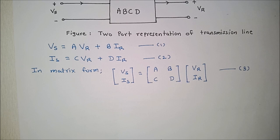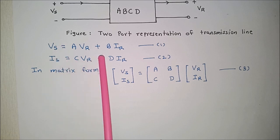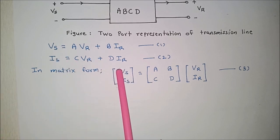So here main advantage of this method is that once we determine ABCD parameters of any line, we can determine Vs and Is by using this equation. Once we determine Vs and Is, we can determine other electrical parameters like sending end power factor, voltage regulation, transmission efficiency, etc.